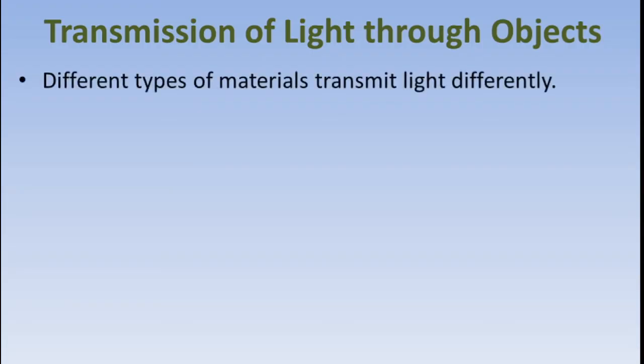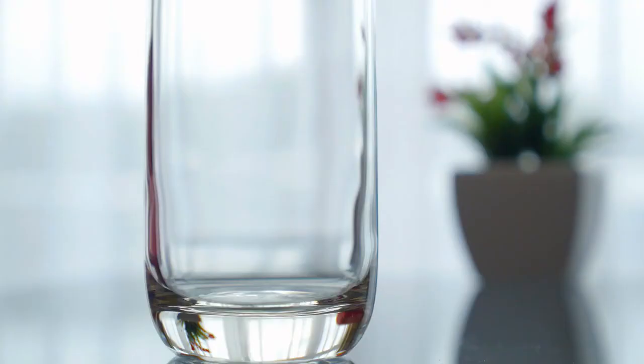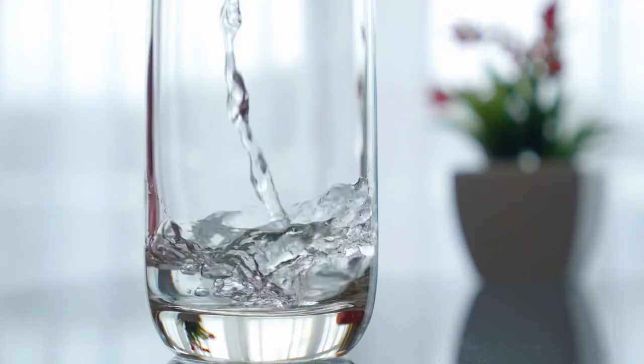Transmission of light through objects: different types of materials transmit light differently. Based on the way they transmit light, materials can be divided into transparent, translucent, and opaque.